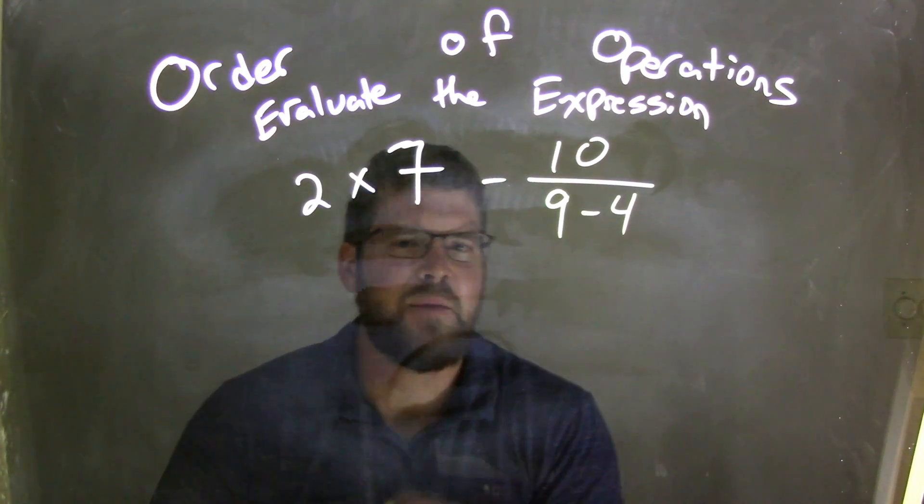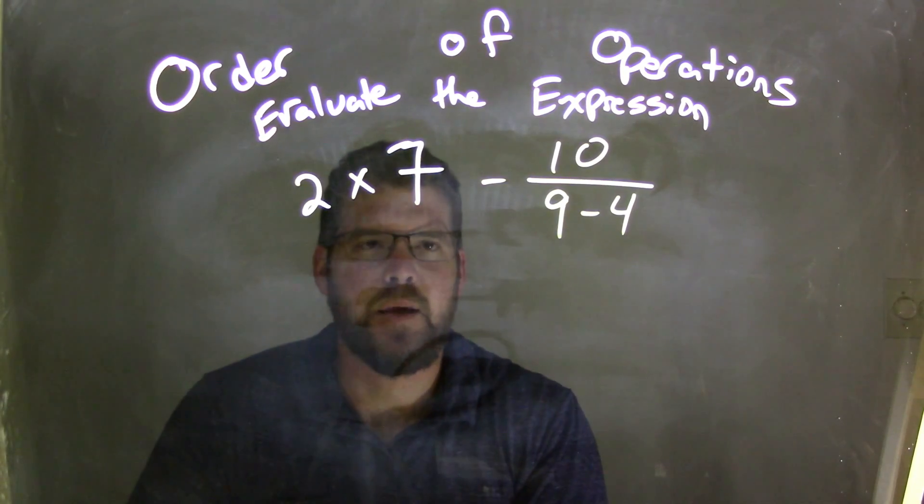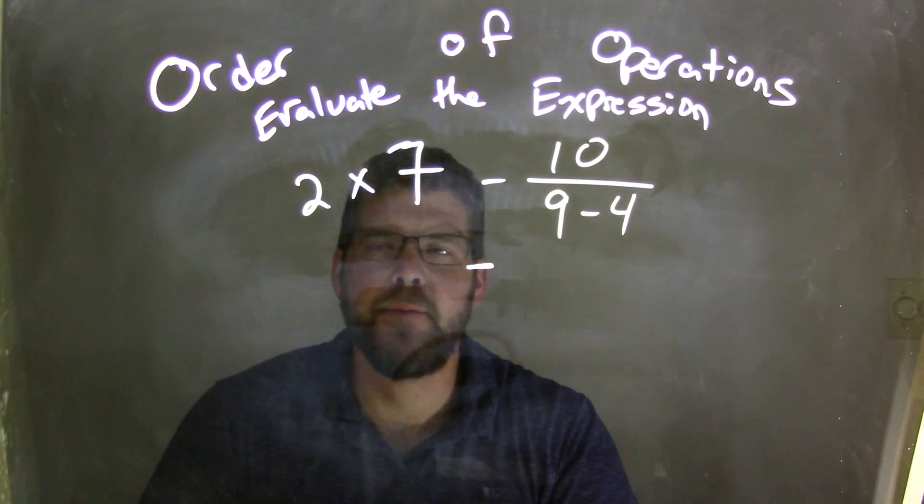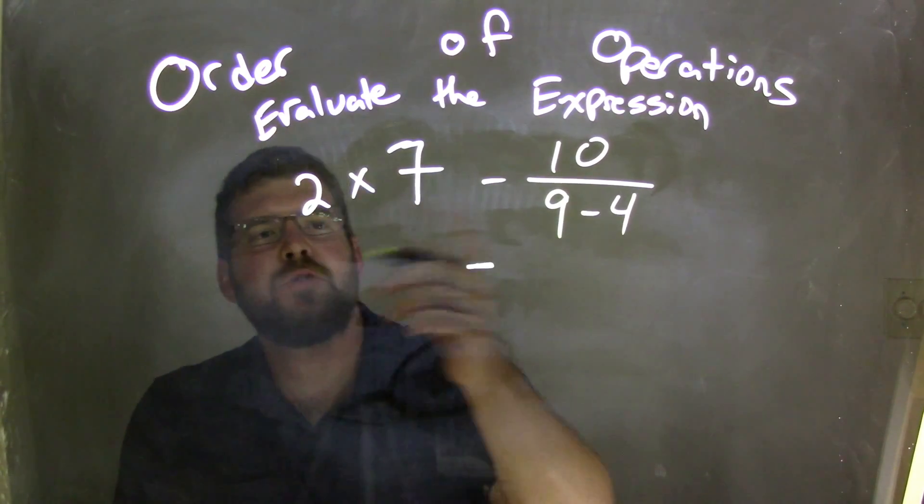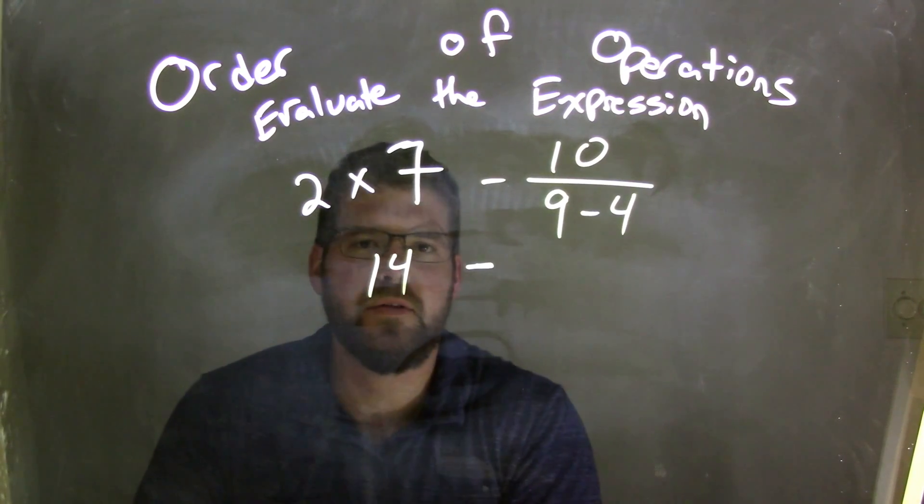So I'm going to do a few steps in the same line. The next line here, a few operations at the same time. This subtraction is almost like a divider between the left and right side. And so I can deal with that 2 times 7, doing the 14.